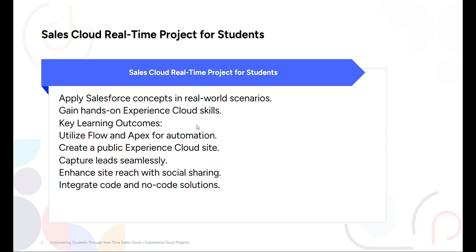Project Summary: This project is called Sales Pipeline System, a fully functional CRM solution. Built on Sales Cloud, it includes lead creation, conversion to opportunity, automating using Apex, flow and dashboard for insights.